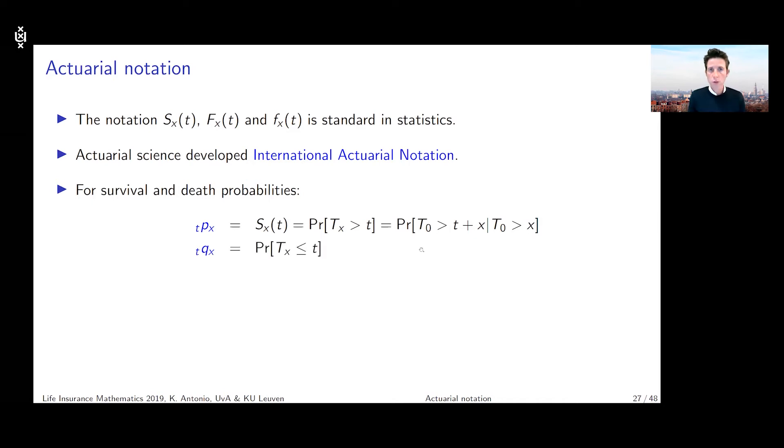For a death probability, we're going to use the notation q. So the _tq_x is the probability that T_x is less than or equal to t. So it's a probability of dying within a certain interval of time. And again, we can write it by using the connection between T_x and T_0.